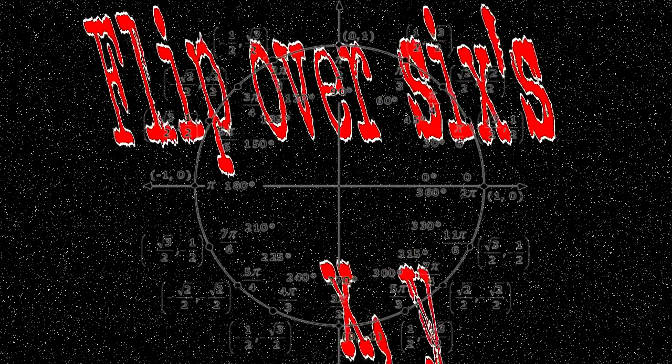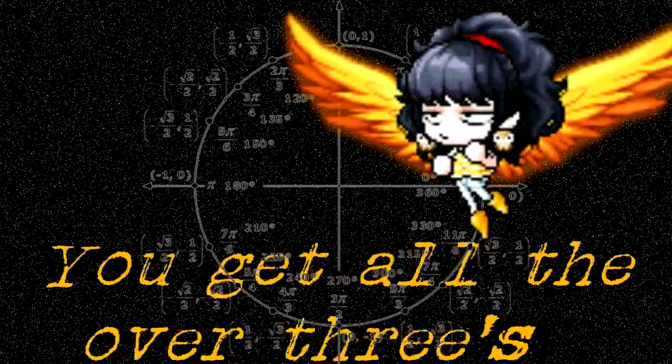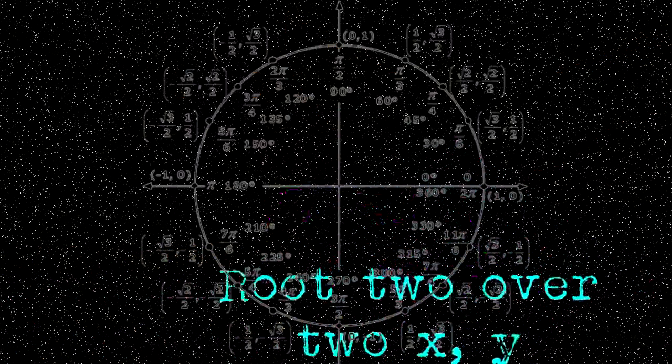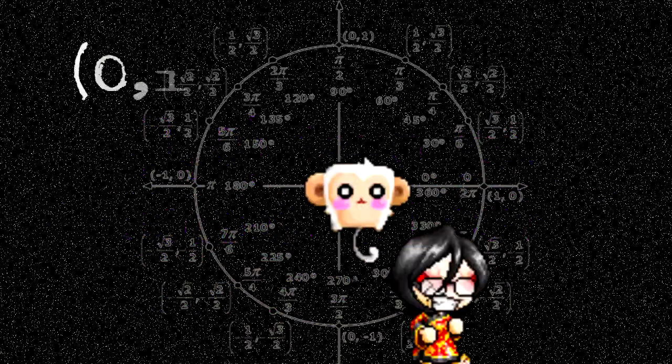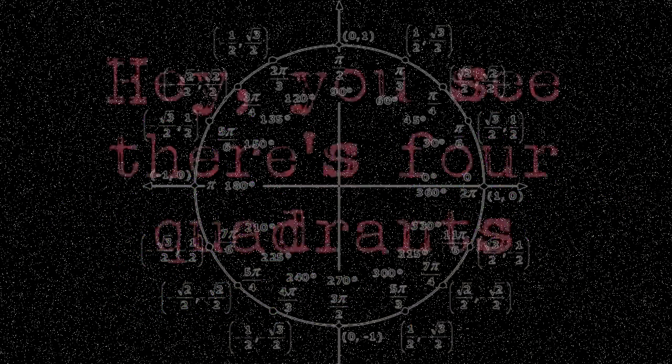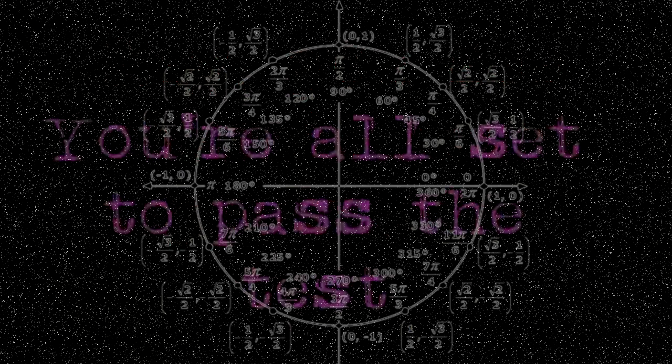Flip over sixes, x y, you'll get all the over threes. Root 2 over 2 x y, that is all the over fours. 1, 0, 2 pi goes first. 0, 1, pi over 2. Hey, you see there's four quadrants, you're all set to pass the time.